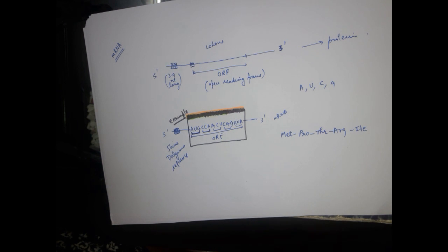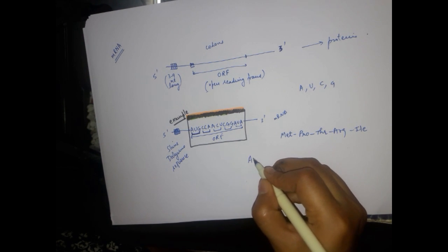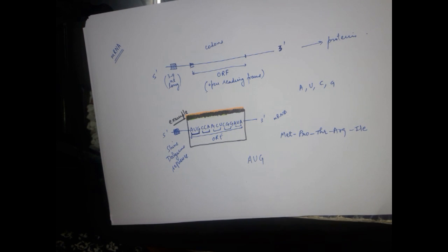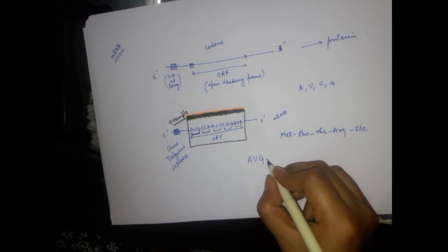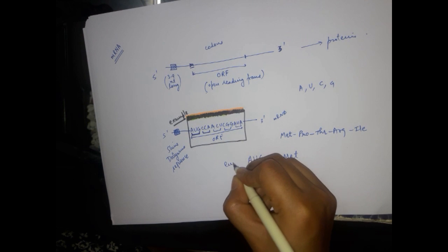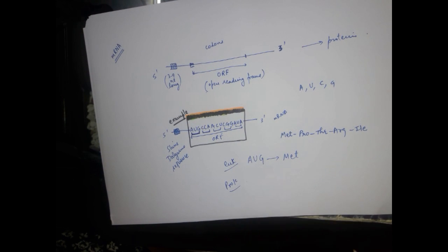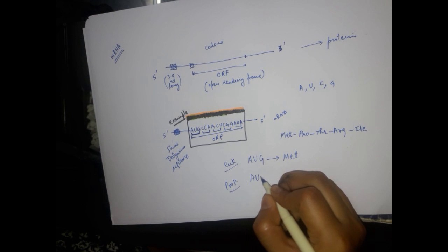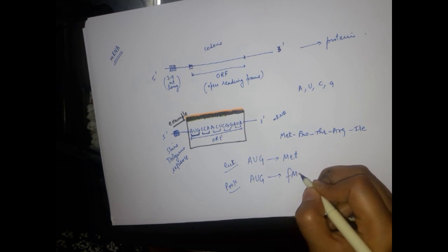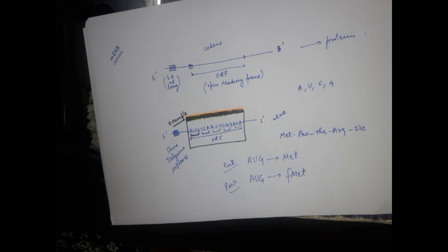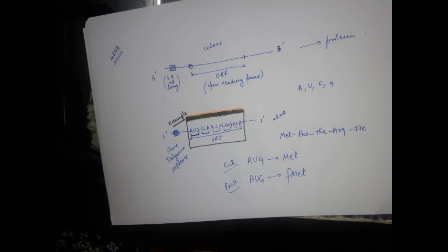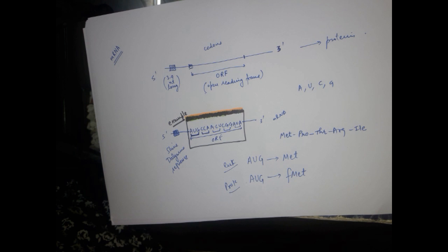In eukaryotes, the start codon is always AUG, meaning all eukaryotic proteins have methionine as their first amino acid. In prokaryotes, AUG is also the start codon but it codes for formyl-methionine. So remember: in eukaryotes the first amino acid is always methionine, and in prokaryotes the first amino acid is always formyl-methionine in the polypeptides formed.